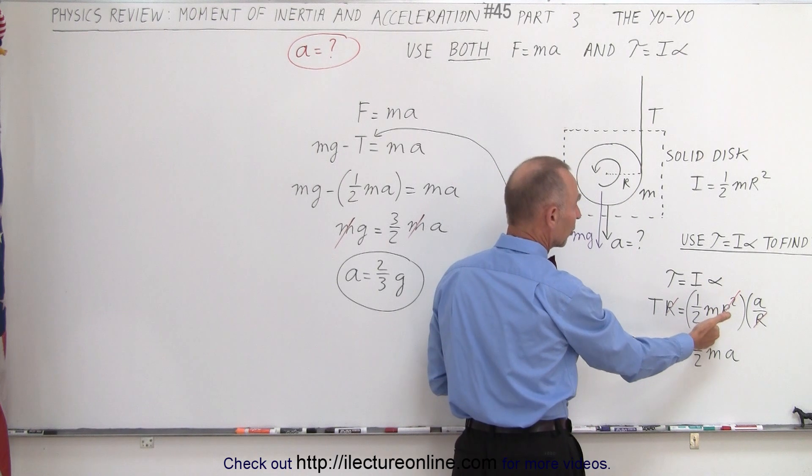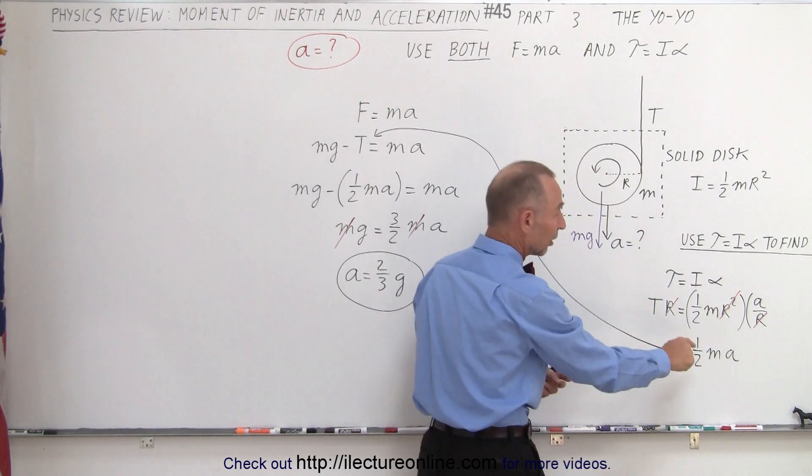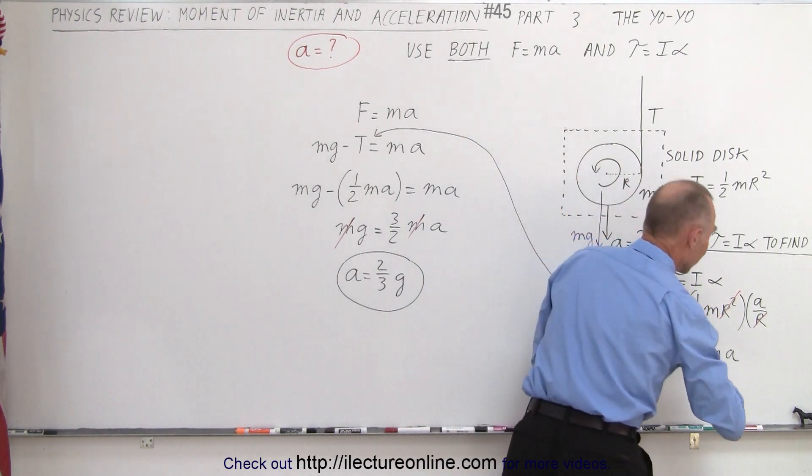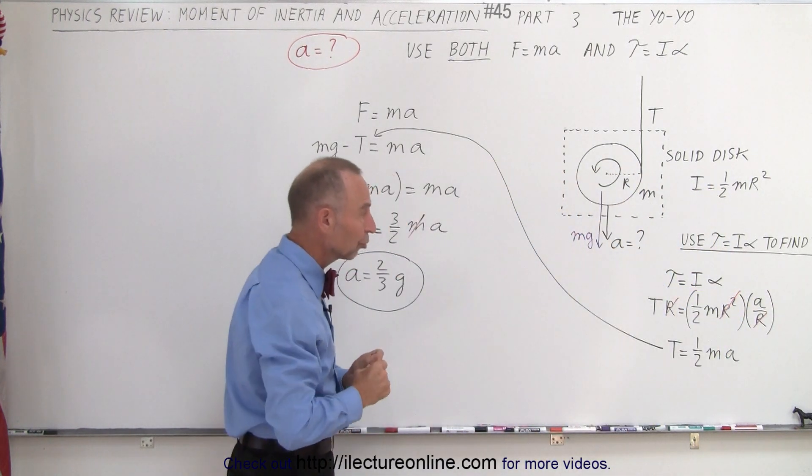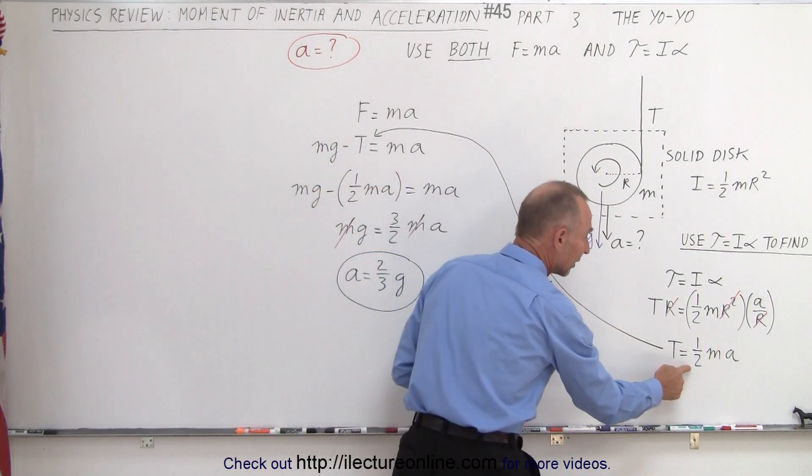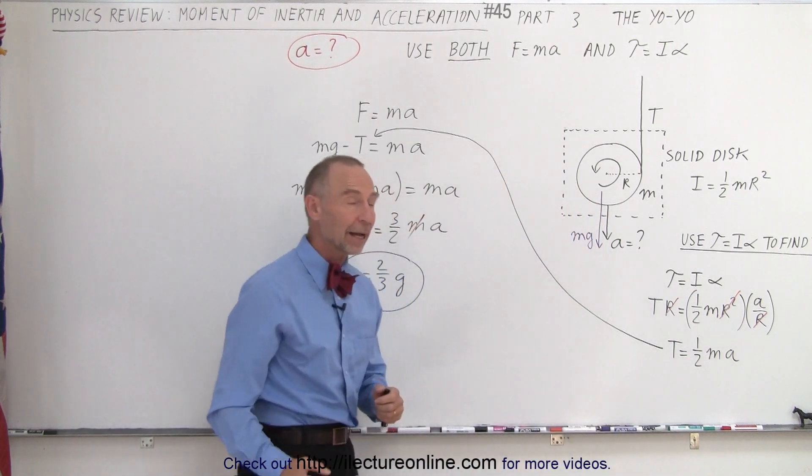And that equals the moment of inertia, one-half MR squared if it's a solid disk, times the ratio of A over R, which is the angular acceleration. Solving that for the tension, we get tension equals one-half M times A.